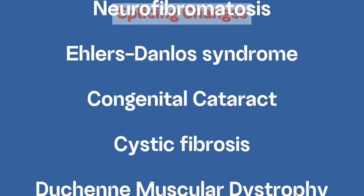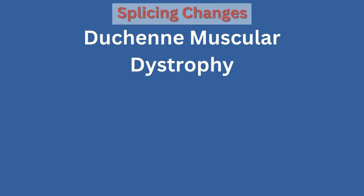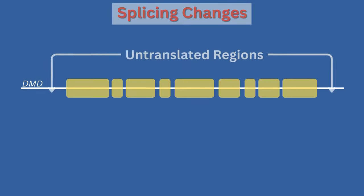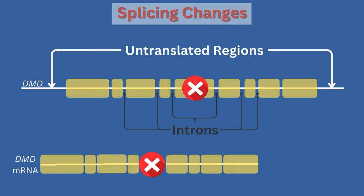Splicing changes can result in disease manifestations for many different disorders. One such example is Duchenne muscular dystrophy and the DMD gene. Variants in the untranslated regions or introns of the DMD gene can cause changes in splicing, leading to the exclusion of functionally important exons in the final mRNA transcript, in turn causing the disease. Although many pathogenic variants can be causal for Duchenne muscular dystrophy and other genetic disorders, splice mutations are much easier to assess with RNA sequencing.